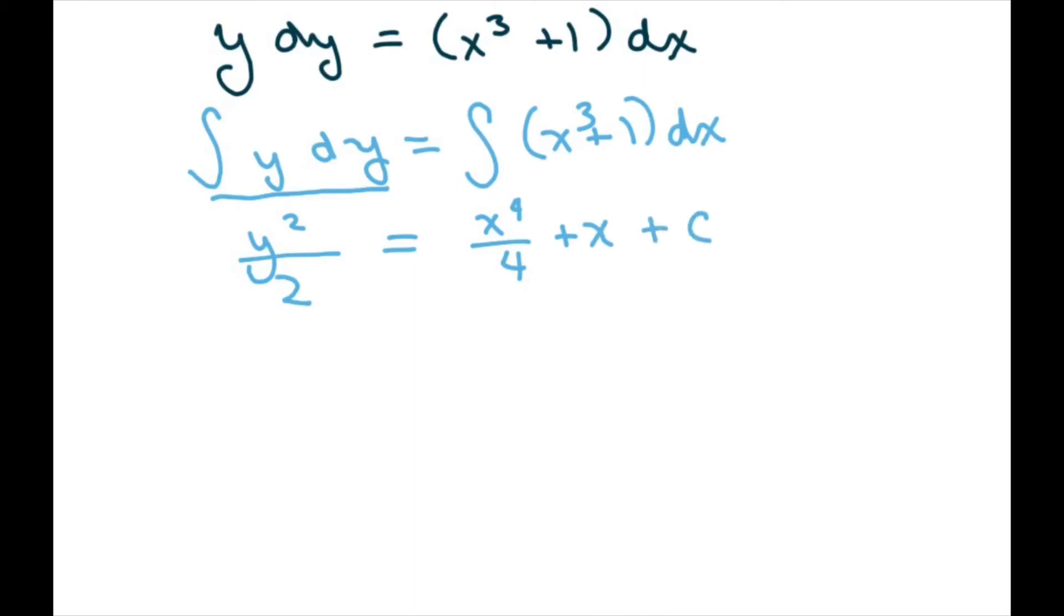Now recall that when y is 2, x is 1. So we need to solve for c. So we just plug that in. So when I plug in my y, get 2 squared, divide it by 2, equals x, that's 1/4, plus 1, plus c. So this is just going to be 2.